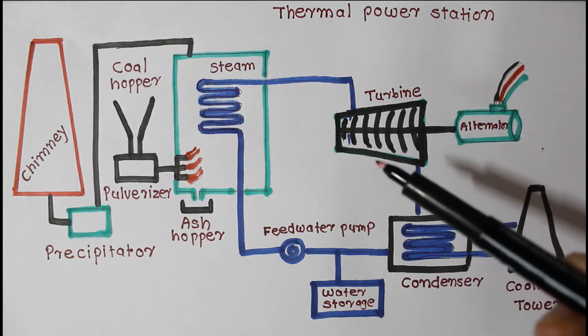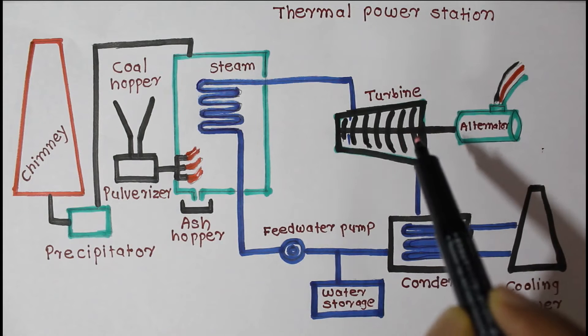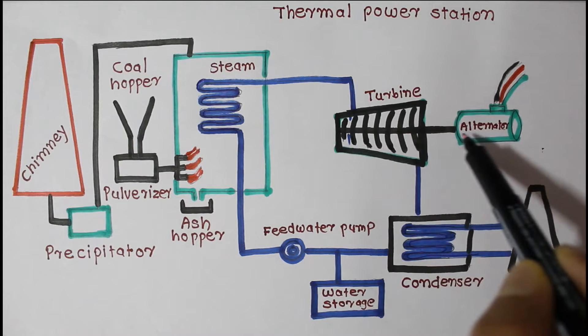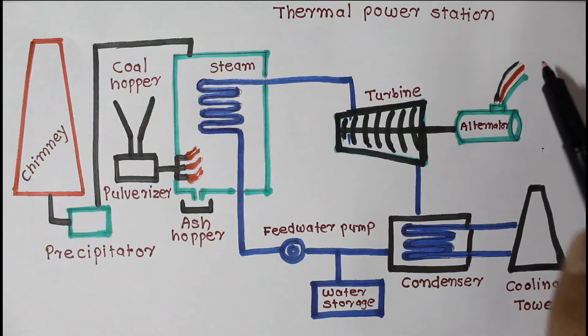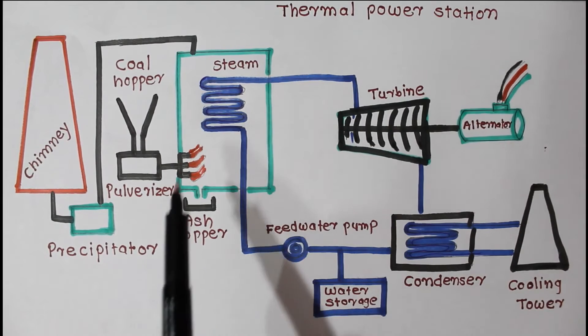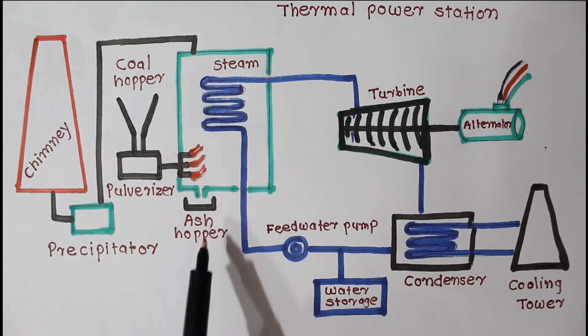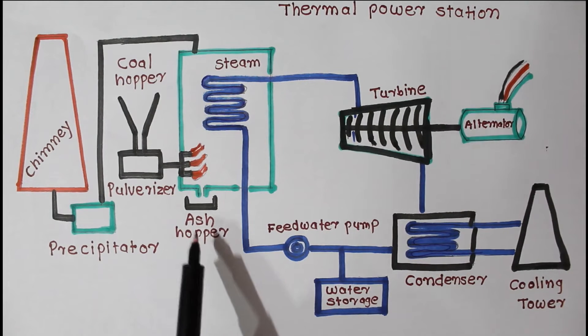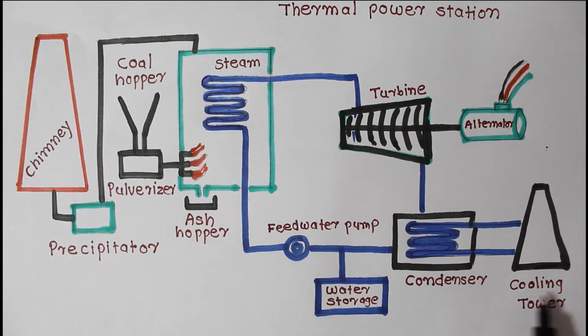A generator is connected to the steam turbine. When the turbine turns, electricity is generated and given as output by the generator, which is then supplied to the consumer through the voltage power lines. Here ash is removed from bottom of boilers in ash hopper. This one is cooling tower.